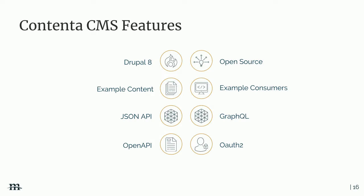Some key features of Contenta: it's all open source. There's example content — when you install, you have the option to install sample content to immediately have something to work with, which is a huge value. There are example consumers: example front-end frameworks in Vue, React, and Angular, showing how to leverage those frameworks in a decoupled setup. JSON API and GraphQL are both included.